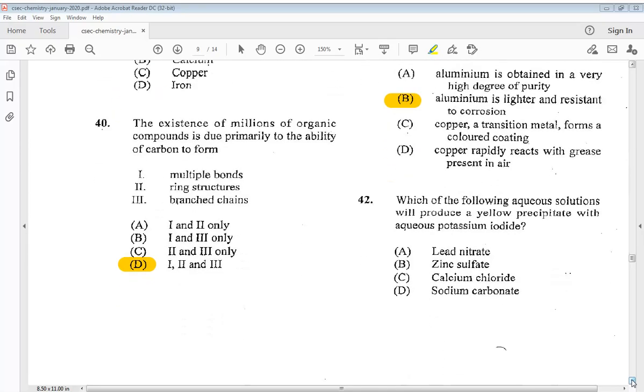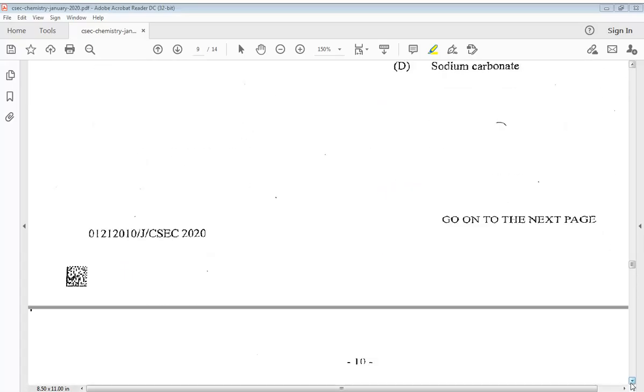Question 42. Which of the following aqueous solutions will produce a yellow precipitate with aqueous potassium iodide? A lead nitrate, B zinc sulfate, C calcium chloride, or D sodium carbonate. So the answer is A lead nitrate.